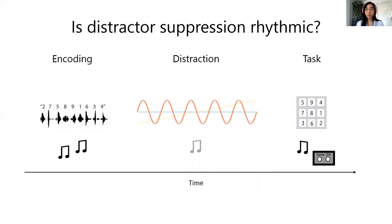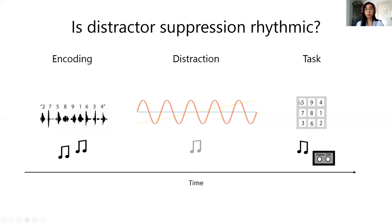So the question is whether distractor suppression is rhythmic. We can't directly measure distractor suppression, so we need to see whether task performance will be rhythmically vulnerable to distraction. What we do is have an encoding phase where participants are presented some stimuli — like digits or tones — and then there is a task later, be it a working memory-related recall or a sensory memory task such as whether two pitches are the same or not. We put a distractor in between these two phases, and we want to see whether the distractor onset time will modulate performance, and if so, whether it is a linear or a rhythmic modulation.